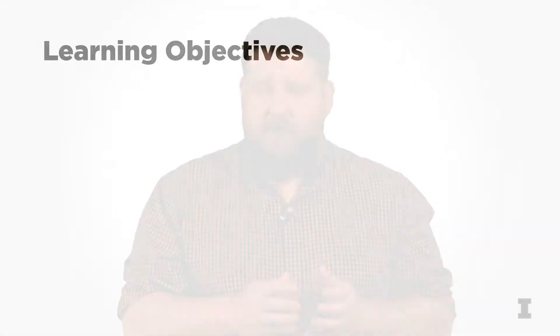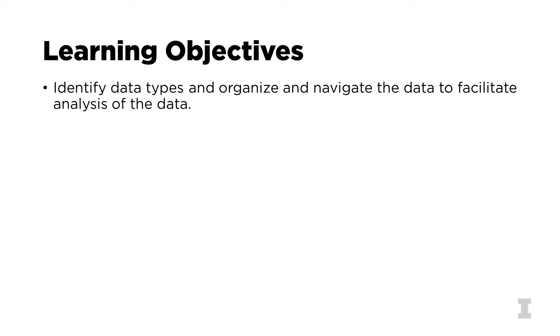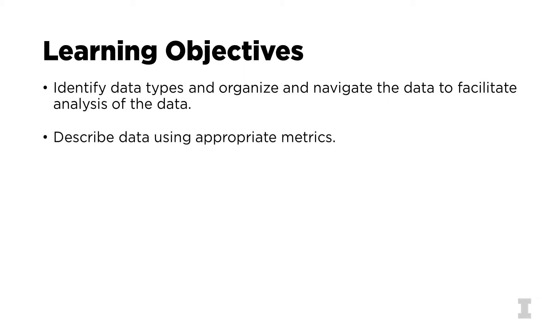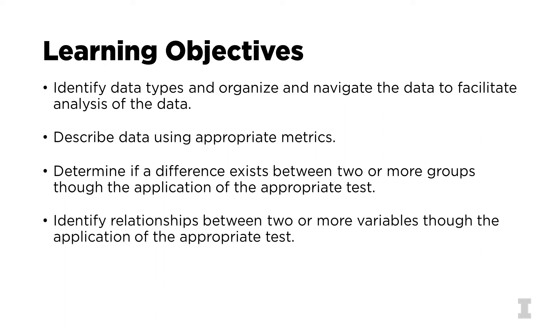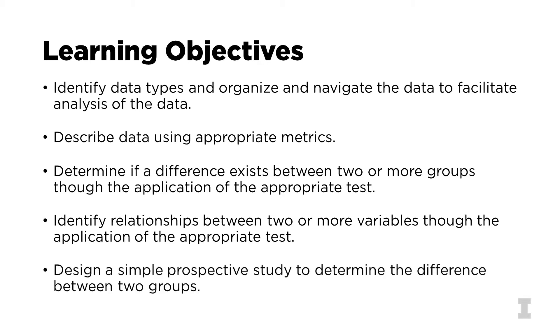In this class, you'll learn both how to wrangle data and perform basic data analysis. By the end of this class, you should know how to identify data types and organize and navigate the data to facilitate analysis. Describe data using appropriate metrics. Determine if a difference exists between two or more groups through the application of the appropriate test. Identify relationships between two or more variables through the application of the appropriate test. And finally, design a simple prospective study to determine the difference between two groups.